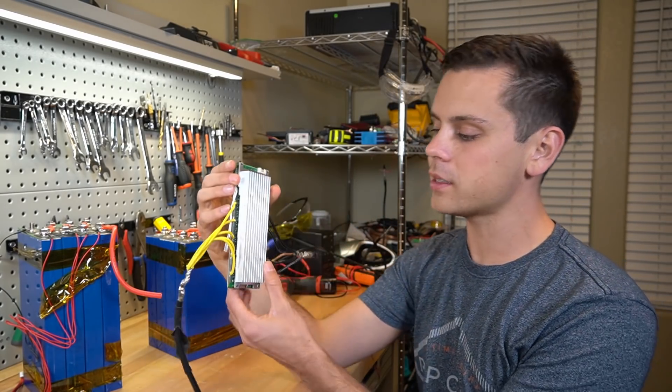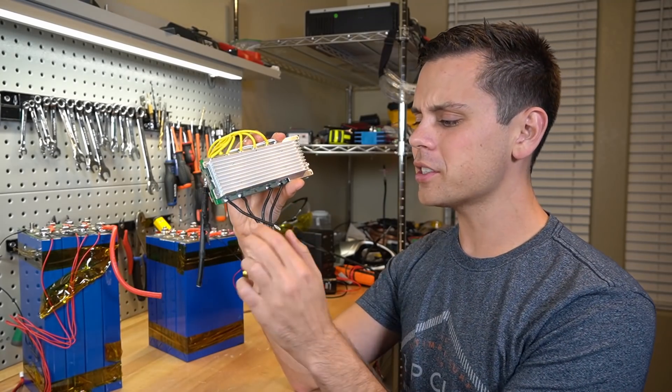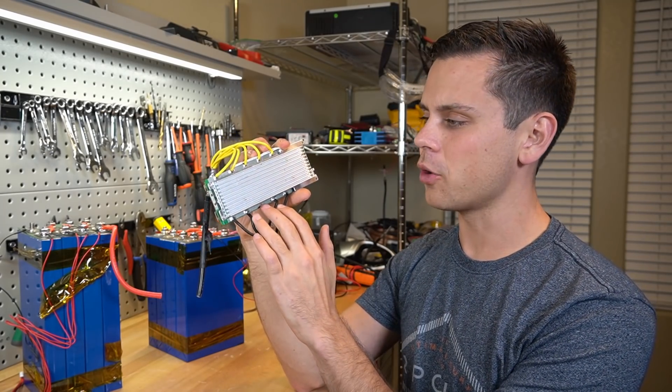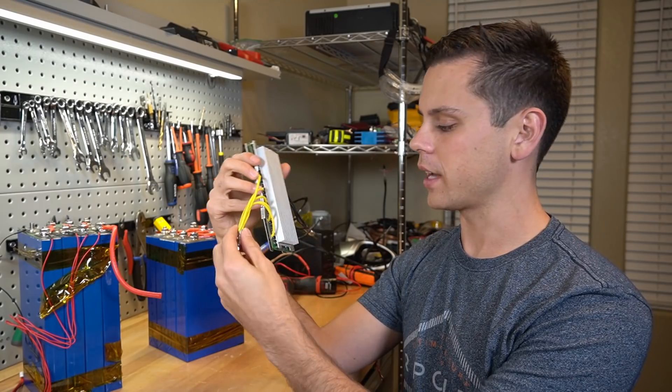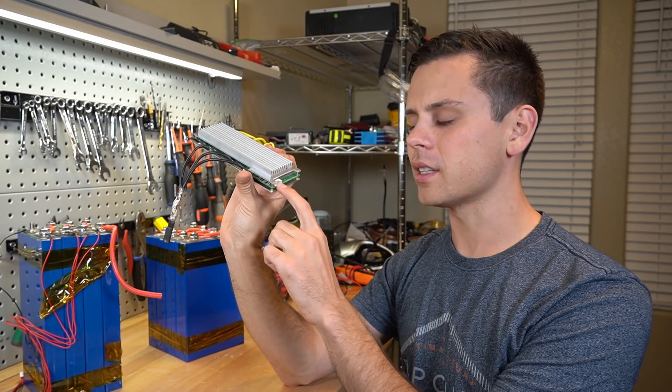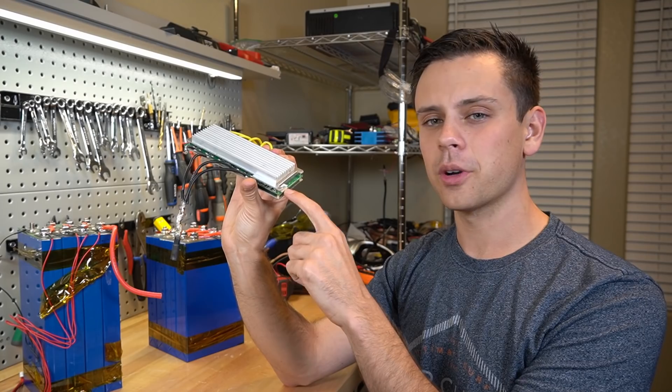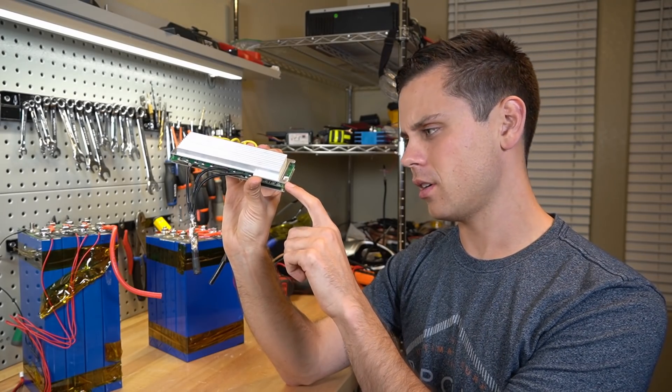They said that this is a new BMS design and they were very sorry that there are four wires going in and five wires going out. They also apologized that the balance cable came out and they said that they're going to tape and glue it from now on.